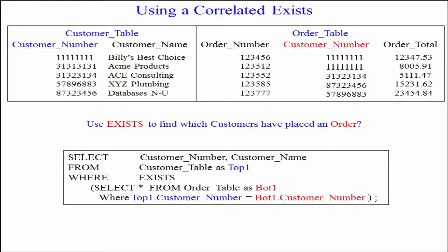In this case, we want to see everything from the customer table if the customer has placed an order. There's some similarities here, but it's different than the subqueries we've seen in the past.